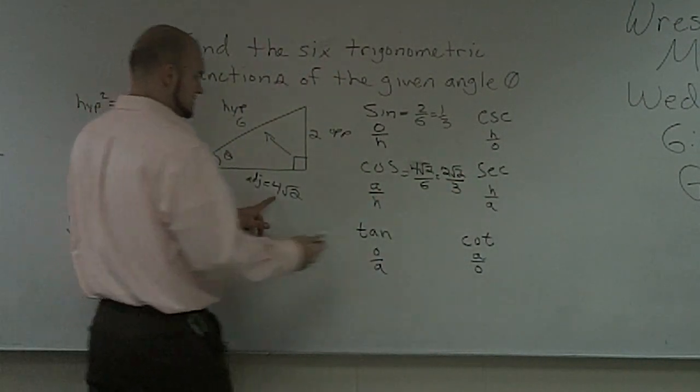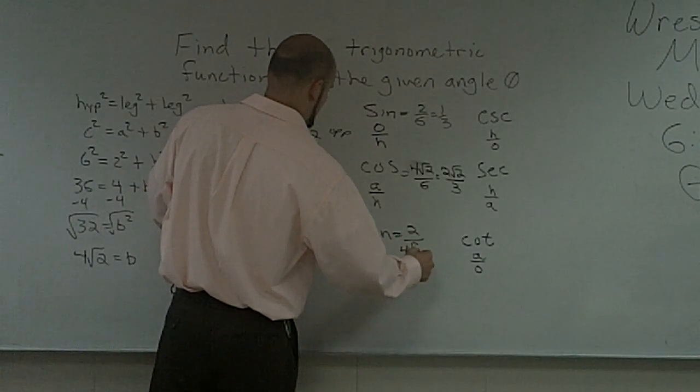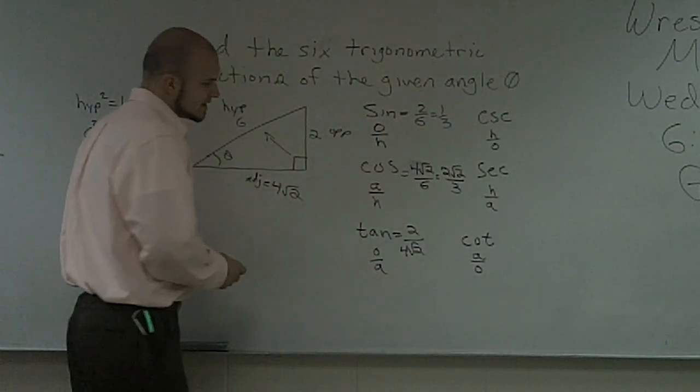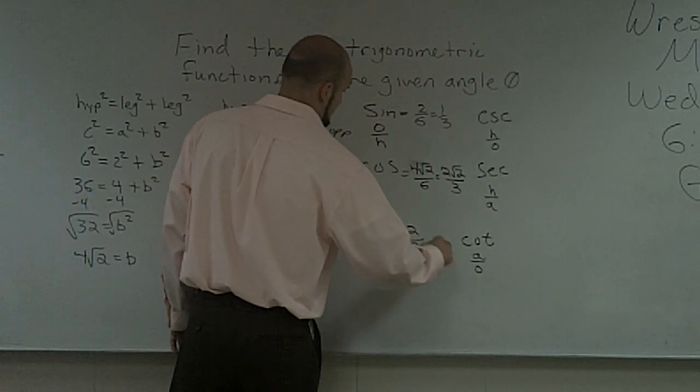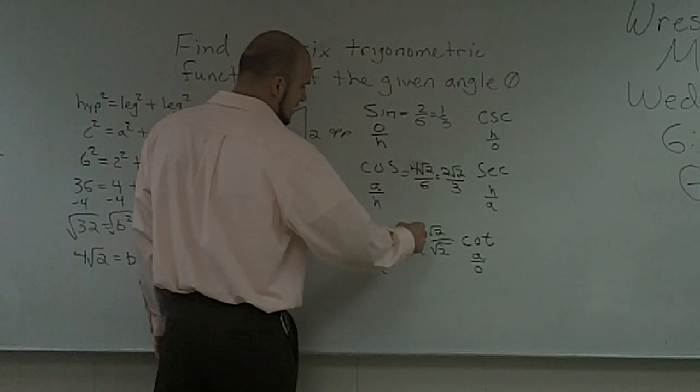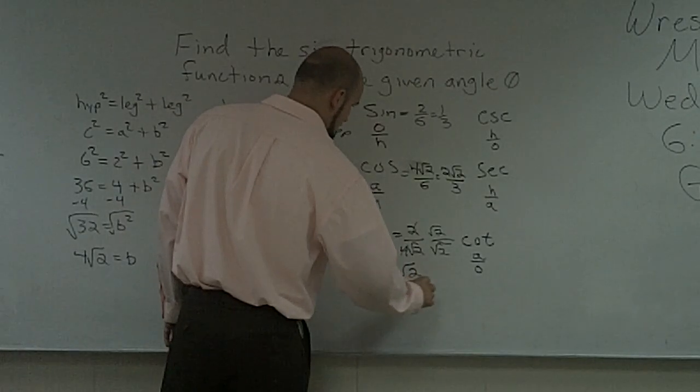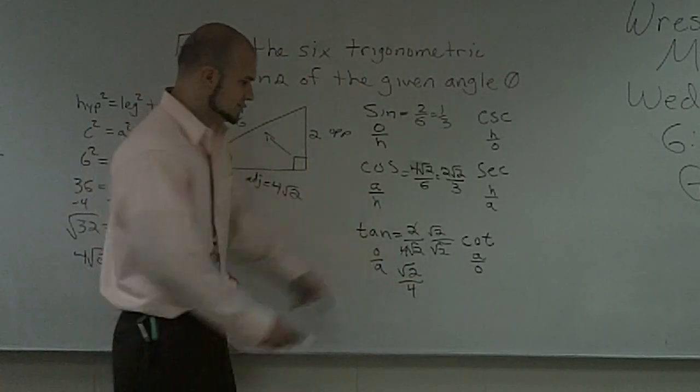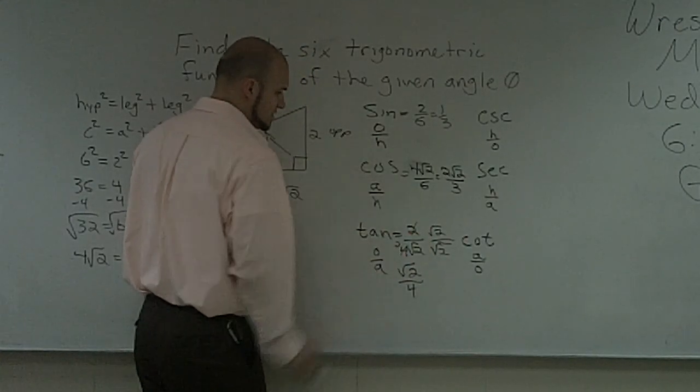My tangent is going to be opposite, 2 over my 4 square root of 2. And then I can multiply the top and bottom by square root of 2. And then those are going to reduce down. So I have square root of 2 over 4 as this becomes a 2. Square root of 2 times square root of 2 is 2. 2 times 2 is 4.